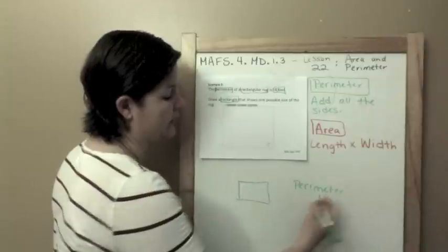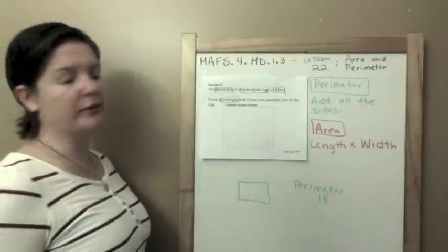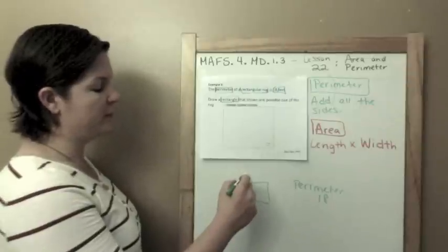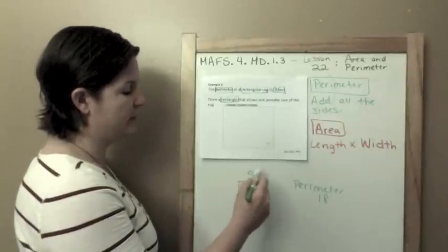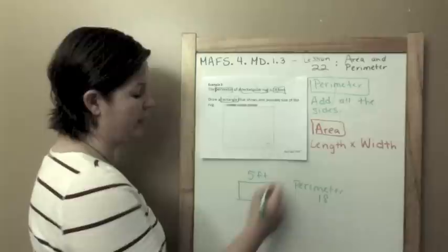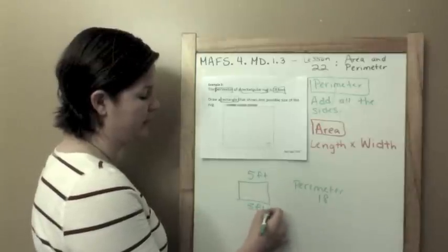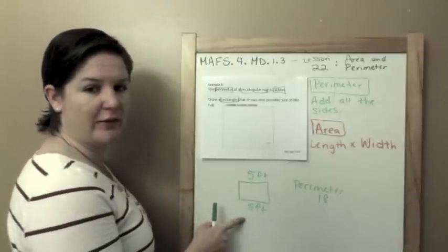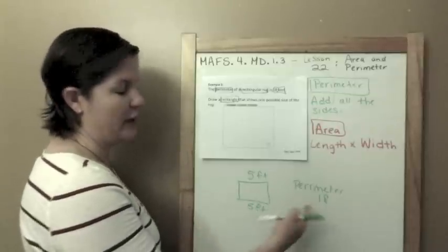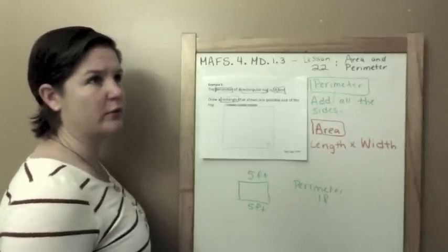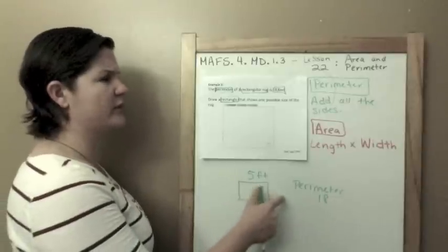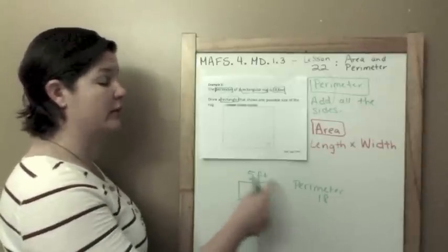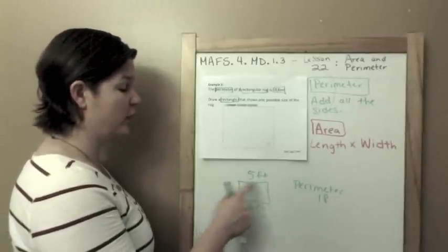18 feet. So let me just kind of play around with numbers. What if this were 5 feet and 5 feet? That would give, 5 plus 5 would give me 10. So now I only need 8 more feet to get the perimeter.